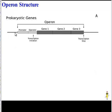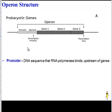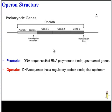So here we have a strand of DNA. The first part of the operon is the promoter. This is a DNA sequence that RNA polymerase will bind to in order to start transcription, and it's located upstream of the genes that will be transcribed. Upstream is just the biologist's way of saying 'in front of.' Next to the promoter is the operator — a DNA sequence that a regulatory protein will bind to, also upstream of the genes.